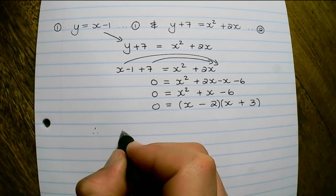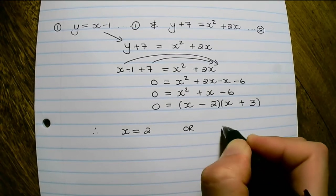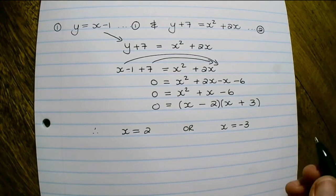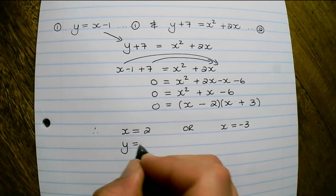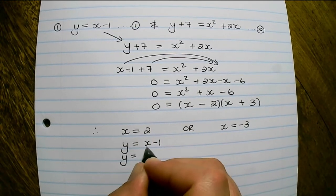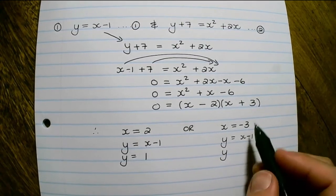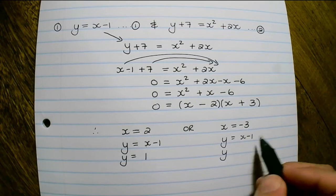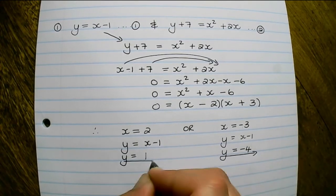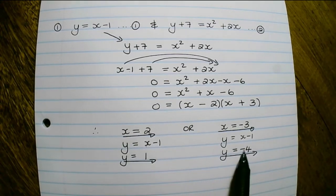Therefore the x values are x equals 2 or x equals negative 3. From there I can use those x values to find y values. So y equals 2 minus 1, which equals 1. And y equals negative 3 minus 1, which means y equals negative 4. So I have 2 x values and 2 y values.